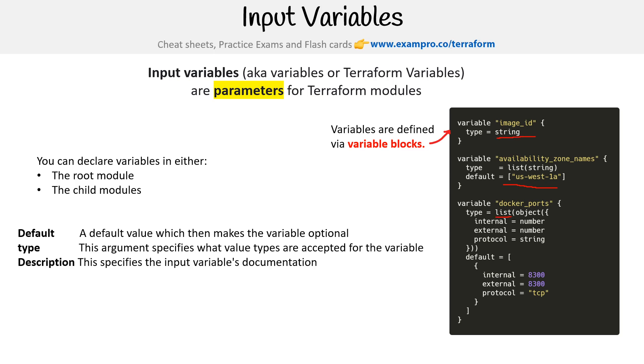For description, this specifies the input variable's documentation. We don't see an example there — it is optional, but it's always great to put a description in when you can.